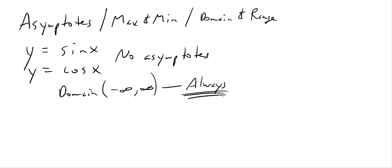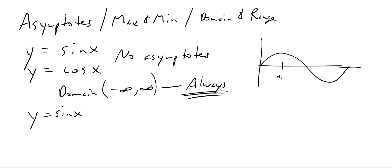For the basic functions, let's concentrate on y = sin(x). How high does this thing go? It goes up to one, because sine of π/2 is one. And how low does it go? Down to negative one, because sine of 3π/2 is negative one. So the range is from negative one to one, with brackets because it includes those values. The range changes if you have an amplitude or a vertical shift.